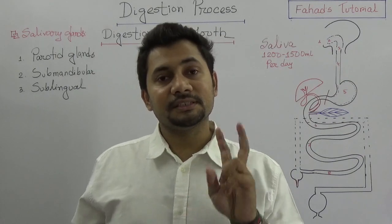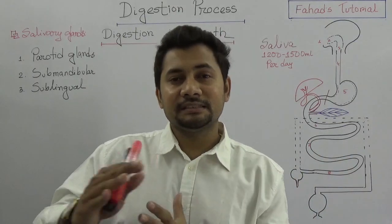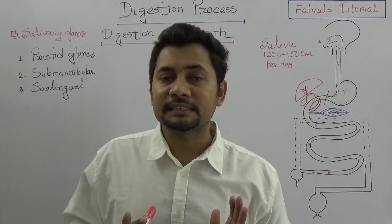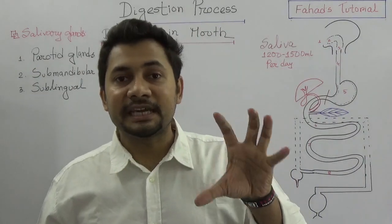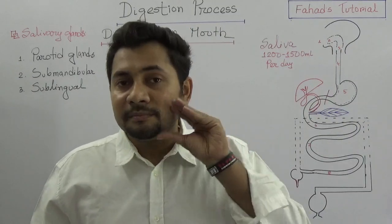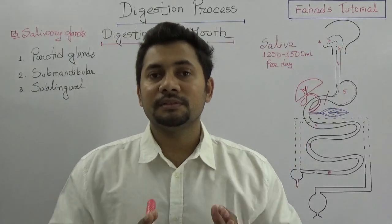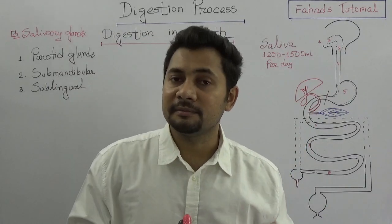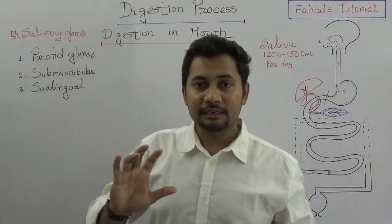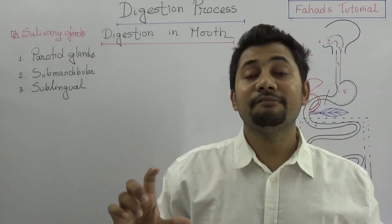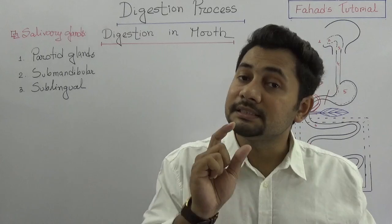The digestion process has two different parts: mechanical and chemical. Chemical means reactions, enzymes, and hormones are involved. Mechanical is all about masticating our foods — we are giving energy through our teeth and tongue. So both the mechanical process and the chemical process are going on in the mouth.